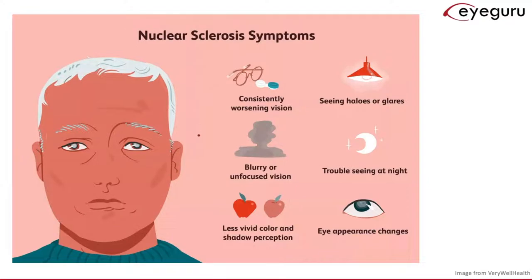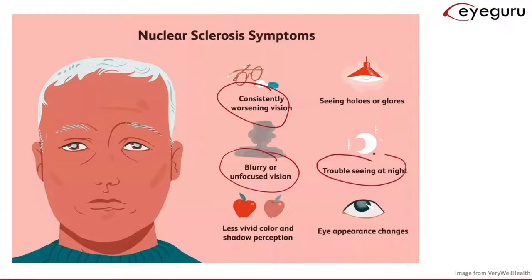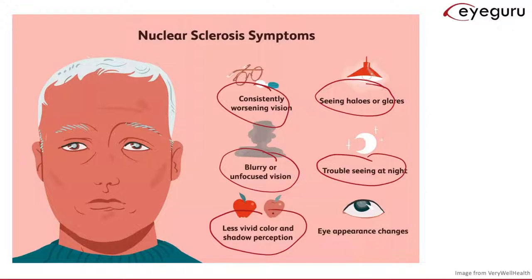Patients with nuclear sclerotic cataracts present with blurry vision that does not improve. Typically this is worse at night and is exacerbated by bright lights, around which they will often see halos or glares. Cataracts can also significantly dull the vividness of colors, and when severe, the cataract can actually be visualized externally as a cloudy lens.